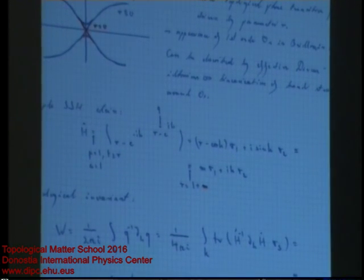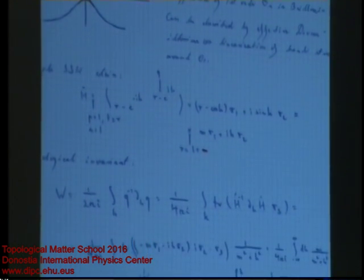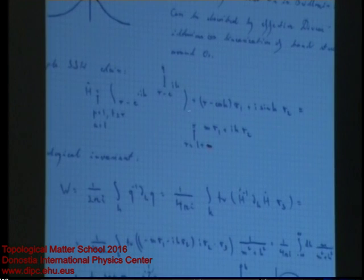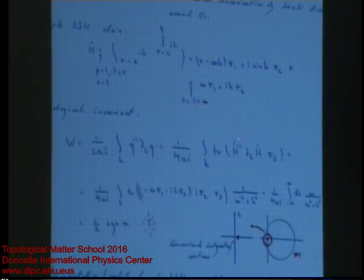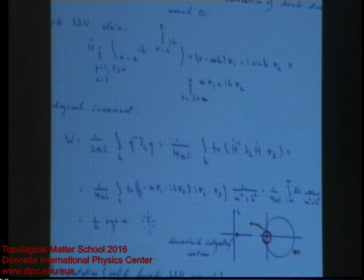It is usually rather convenient to use Dirac representations for the computation of winding numbers or topological invariants. For the SSH chain, the winding number is the number of times the curve q winds around zero in the complex plane, which can be written as an integral. Equivalently, this can be written as the inverse of the Hamiltonian — which exists as long as there is a gap — multiplied by its momentum derivative and σ₃, integrated over k.